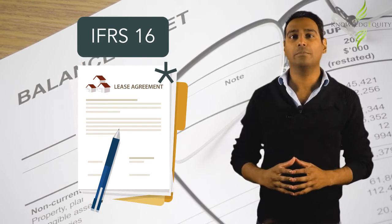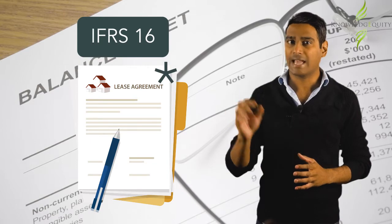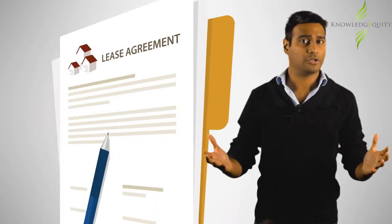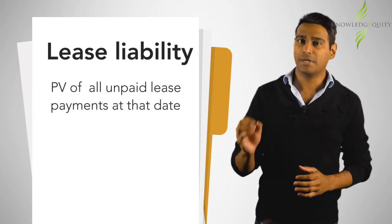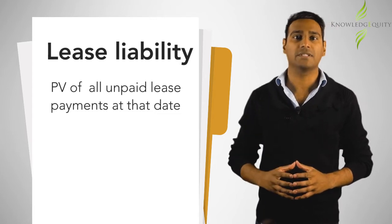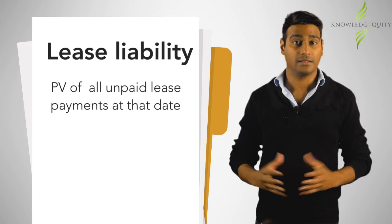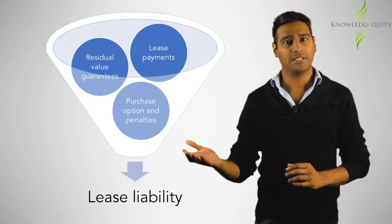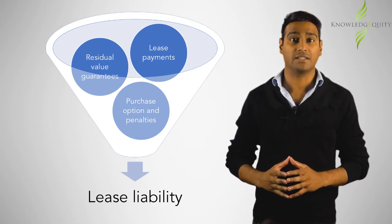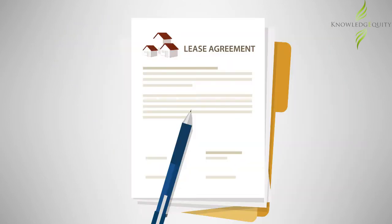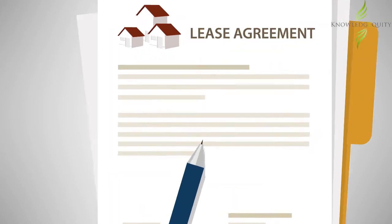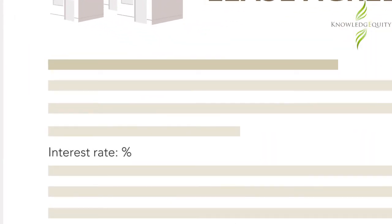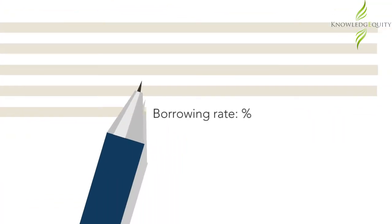There will be a lease liability and a right of use asset. The lease liability is measured as the present value of all lease payments that are not yet paid at that date. These include the residual value guarantees, variable payments, and penalty and purchase options if these are reasonably certain. The discount rate to be used is the interest rate implicit in the lease, and if that is not readily available, then it is the lessee's incremental borrowing rate.